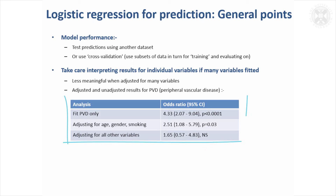For example, if we just fit peripheral vascular disease on its own without doing any adjustments, we get a really high odds ratio. When we adjusted for age, gender and smoking in the model we just had, the odds ratio is still definitely significant, but it's not quite as high.